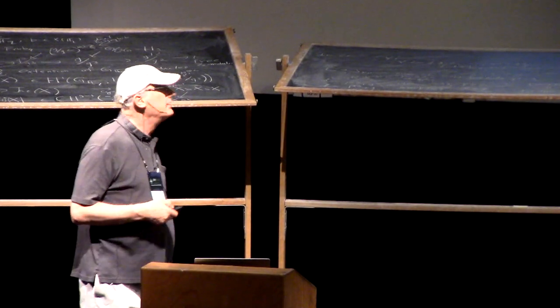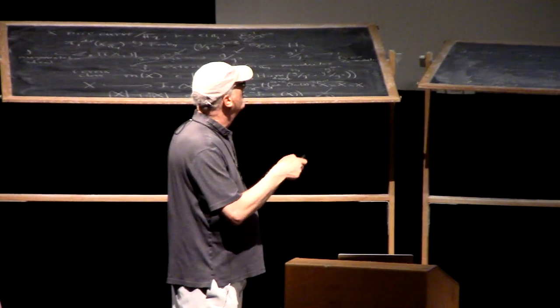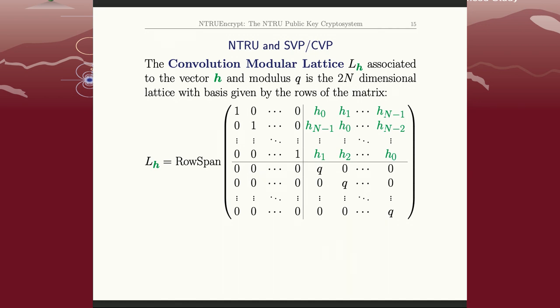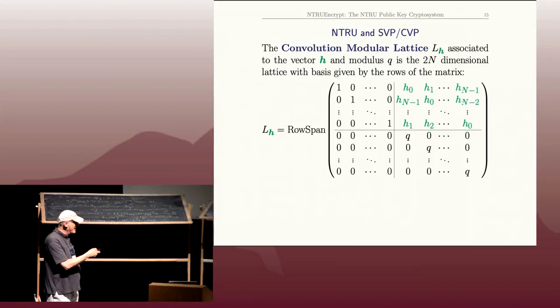Remember, Alice's public key is this single polynomial h, whose coefficients are h0, h1, h2. So, I'm going to form this huge 2n by 2n matrix. And it's actually not that complicated. It's got four blocks. That's the identity matrix in the upper left. Even easier, the lower left is the zero matrix. The lower right is also the identity matrix, except I'm... Well, it's multiplied by q. So, it's a diagonal matrix with q's.